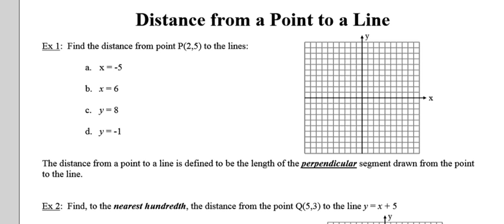In example one, they ask us to find the distance from the point P with coordinates 2, 5 to each of the following lines. You probably guessed, because the graph is there, that the very first thing we're going to do is plot point P on our set of coordinate axes. So there's point P there in green. And they want us to find the distance from point P, first of all, to the line whose equation is x equals negative 5. Recall that the graph of x equals negative 5 is going to be a perfectly vertical line passing through the x-axis at negative 5. So here's my line x equals negative 5, and we're trying to find the distance from this green point P to this pink dotted line.